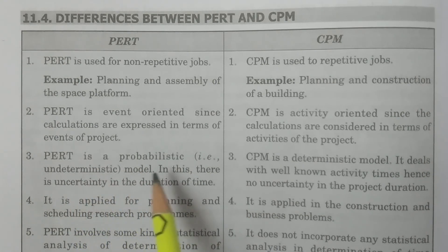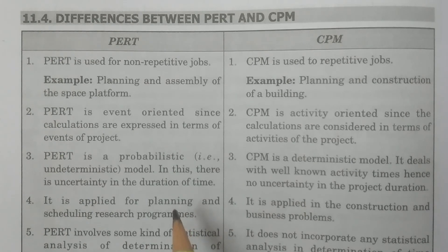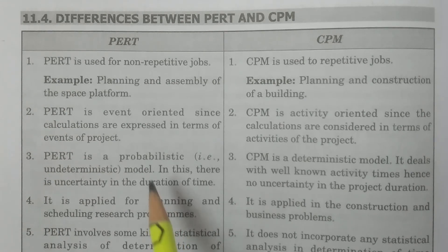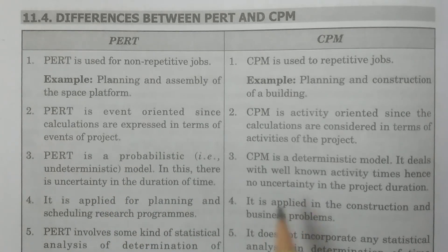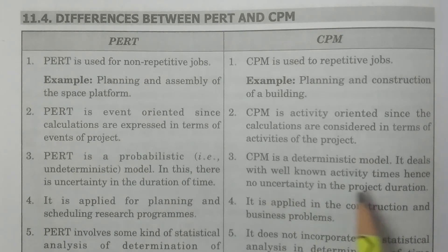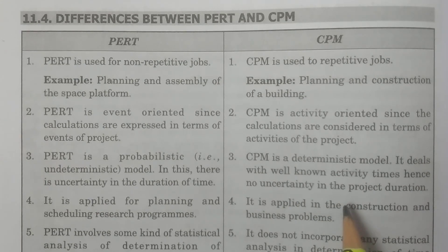Coming to the third point: PERT is a probabilistic, that is undeterministic, kind of model where there is uncertainty in the duration of time — it will not be completed in a specified time. Whereas CPM is a deterministic model; it deals with known activity times, hence there is no uncertainty in the project duration.